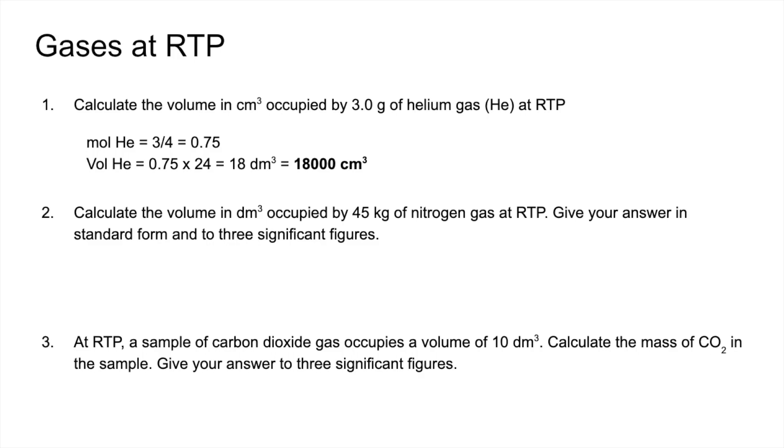So second question, very similar to the first one but there's a few extra bits in. So the mass is in kilos and we've got to remember to put it in standard form and give it to three significant figures. So the moles of nitrogen, remember nitrogen exists as the diatomic N2 molecule. So mass over MR, so 45,000 grams over 28 gives us 1607.